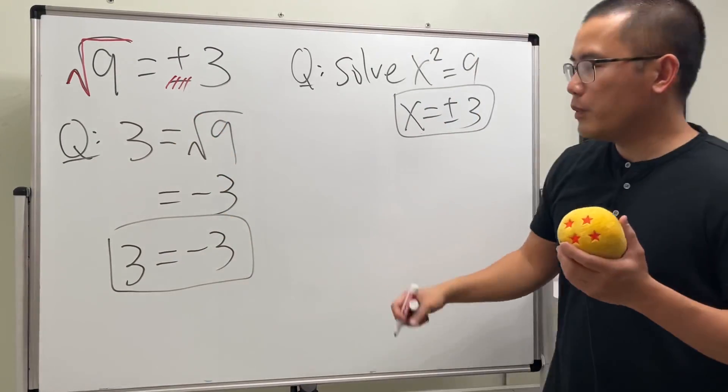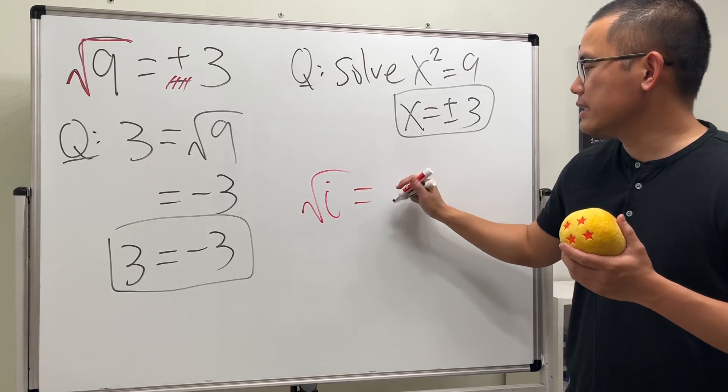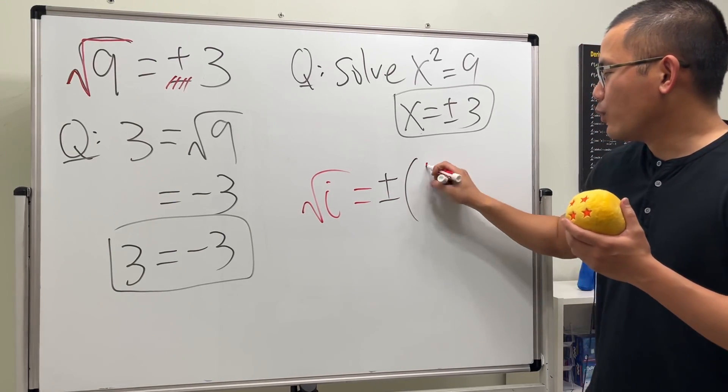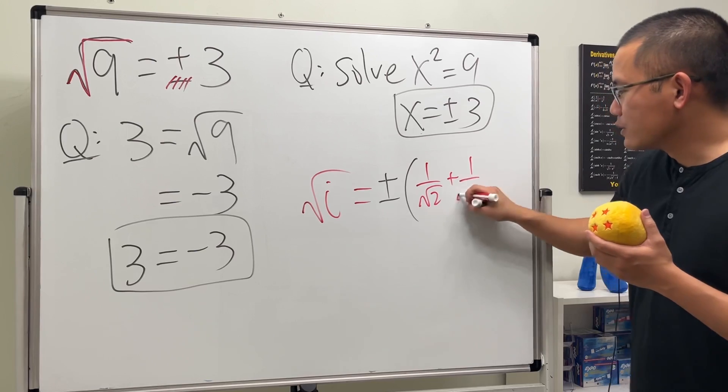Now you may be wondering, when we have square root of i, why do we write it as both plus and minus: one over square root of two plus one over square root of two i?